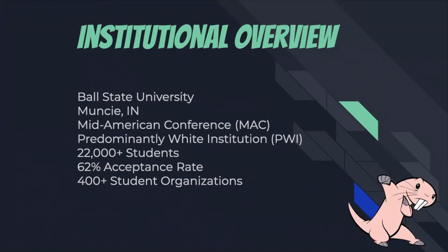To give some institutional overview: Ball State University is located in Muncie, Indiana — a lot of corn and not a lot around the university. We're part of the Mid-American Conference, otherwise known as the MAC. Ball State is considered a predominantly white institution, or PWI. There are over 22,000 students in combination of undergraduate and graduate, a 62% acceptance rate, and over 400 student organizations on campus.